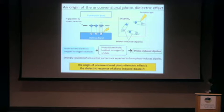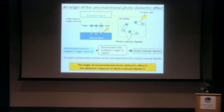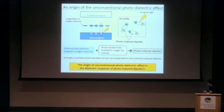I will briefly discuss the origin of the unconventional photodirected effect in zinc-substituted lanthanum aluminate. As shown in the schematic figure, electrons and holes are generated by photo-irradiation. If the photo-excited electrons are trapped in oxygen vacancies and the photo-excited holes are localized in oxygen 2p orbitals, they are expected to form photo-induced dipoles. We suggest that the origin of the unconventional photodirected effect is the electric response of these photo-induced dipoles.